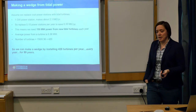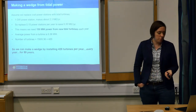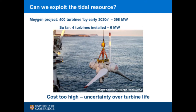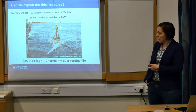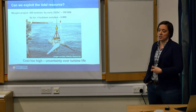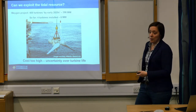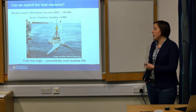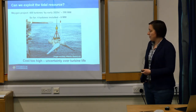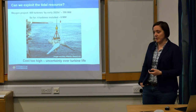420 doesn't sound like too many — it's about one and a bit a day. So how are we doing? The biggest project in the UK is the MeyGen project. They're promising just under 400 megawatts by the early 2020s, and they actually now have six megawatts of power on the grid — proper pieces of hardware connected to the grid selling power — but there are only four of them, which is not very close to 420 per year.